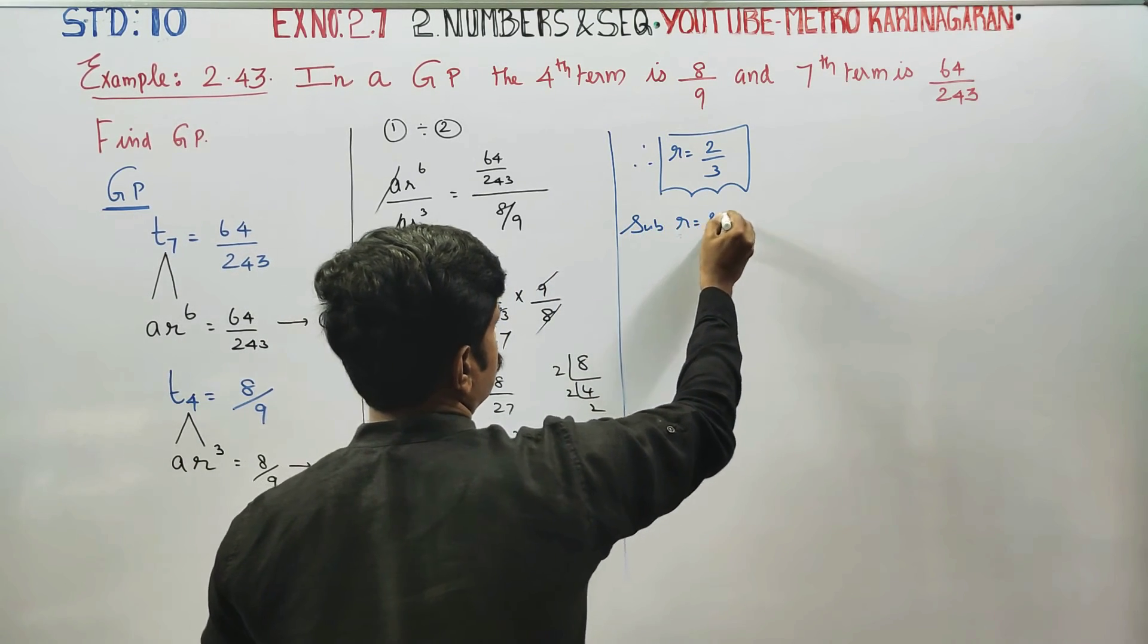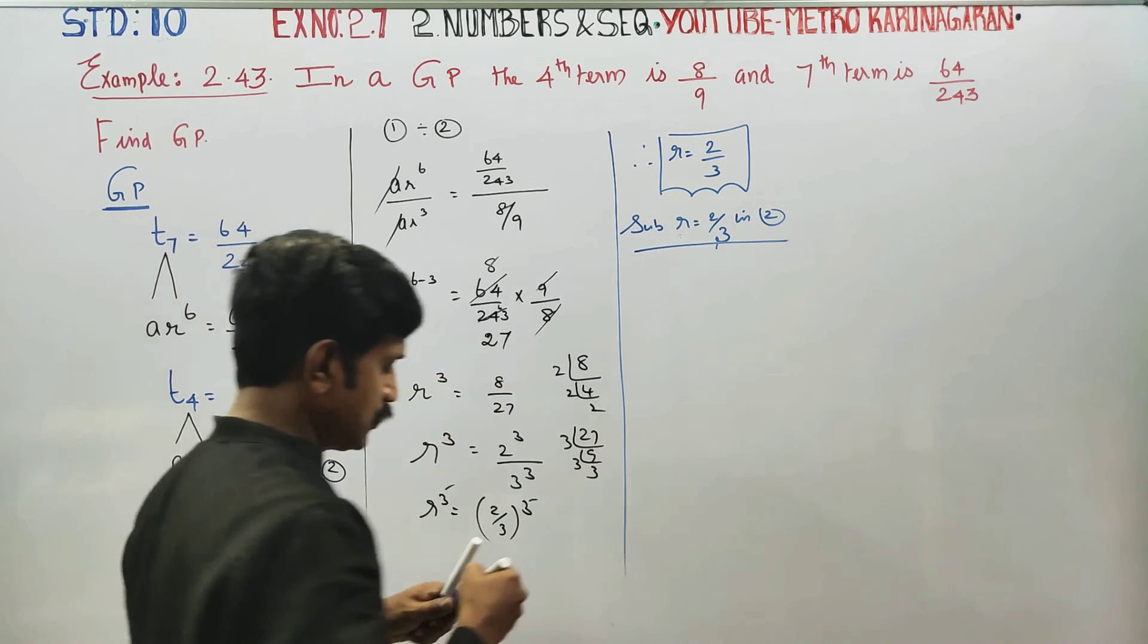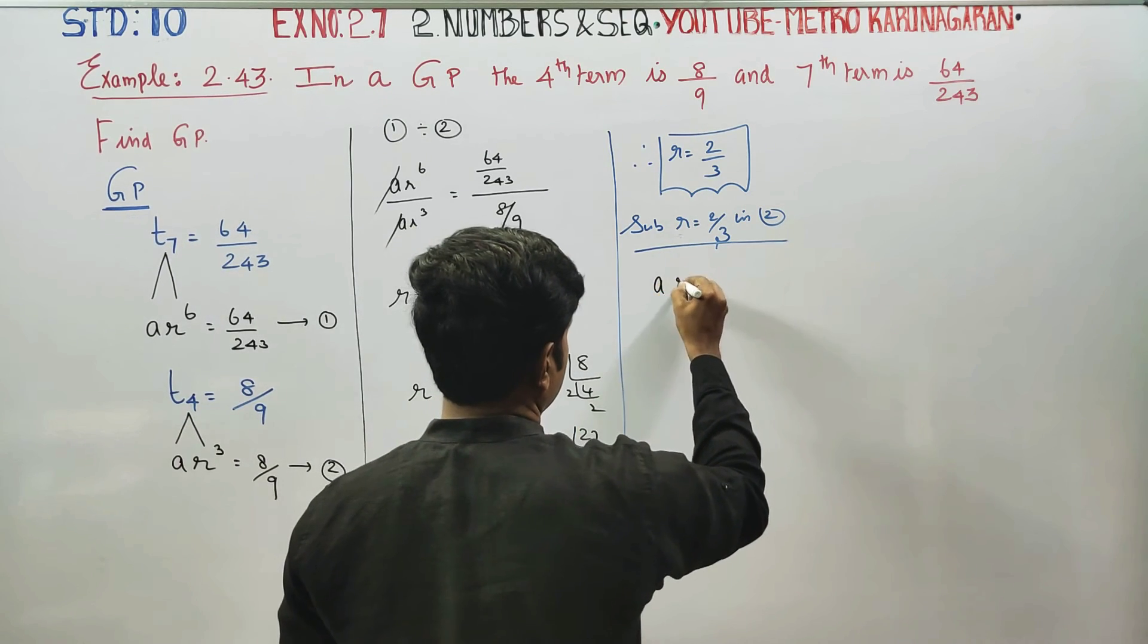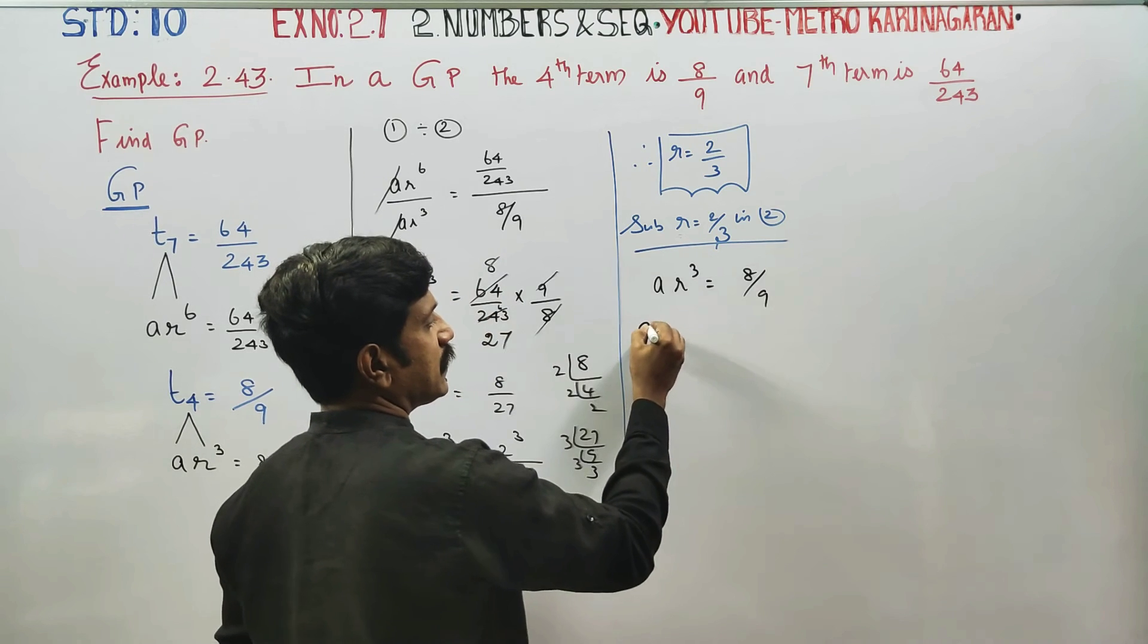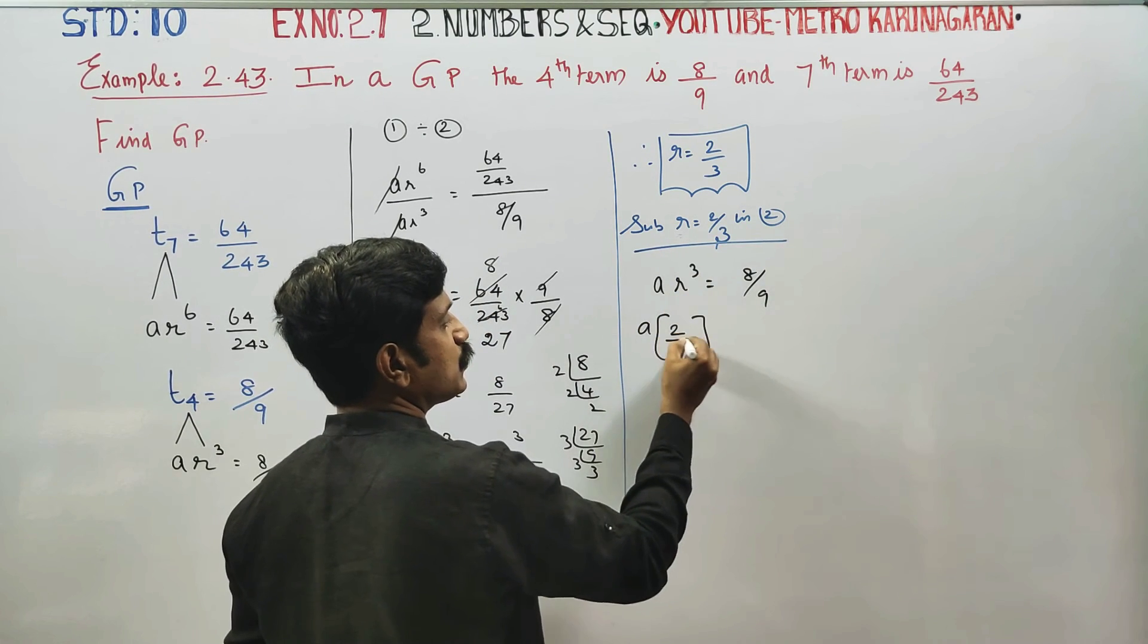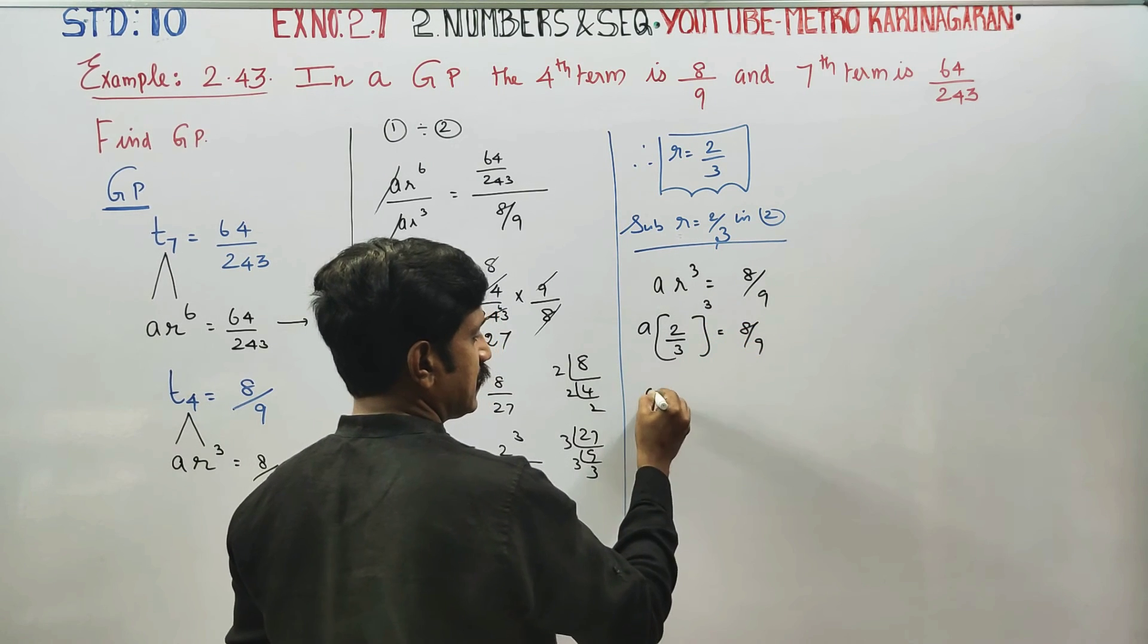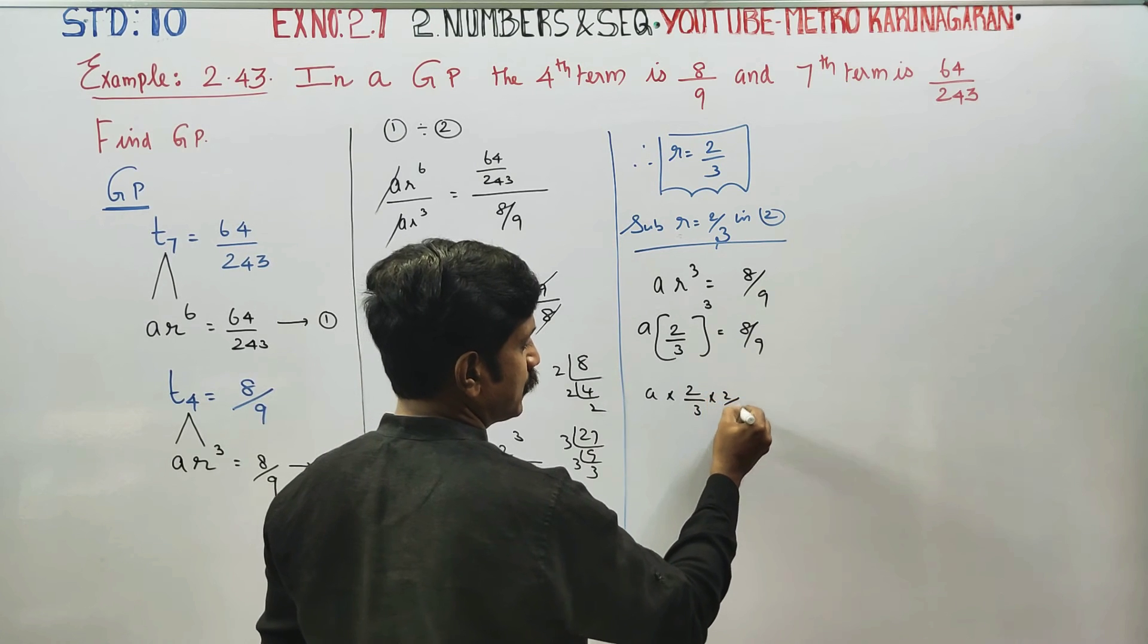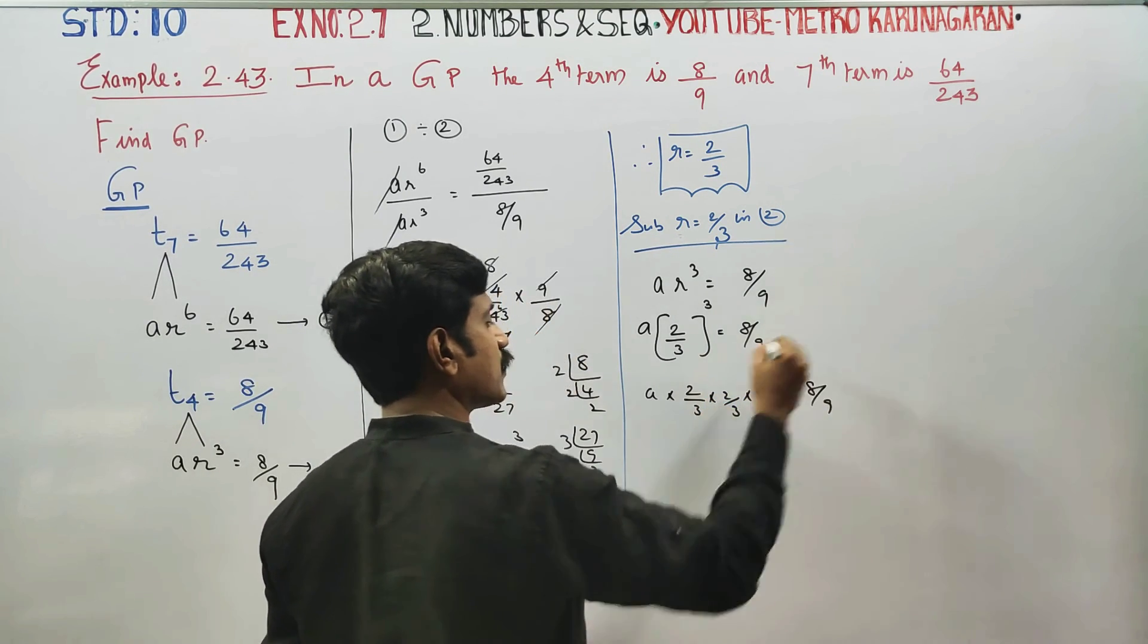R is equal to 2 by 3 in equation number 2. Equation number 2 is equal to 2 by 3 whole cube is equal to 8 by 9. A into 2 by 3, 3 is equal to 2 by 3, is equal to 8 by 9.